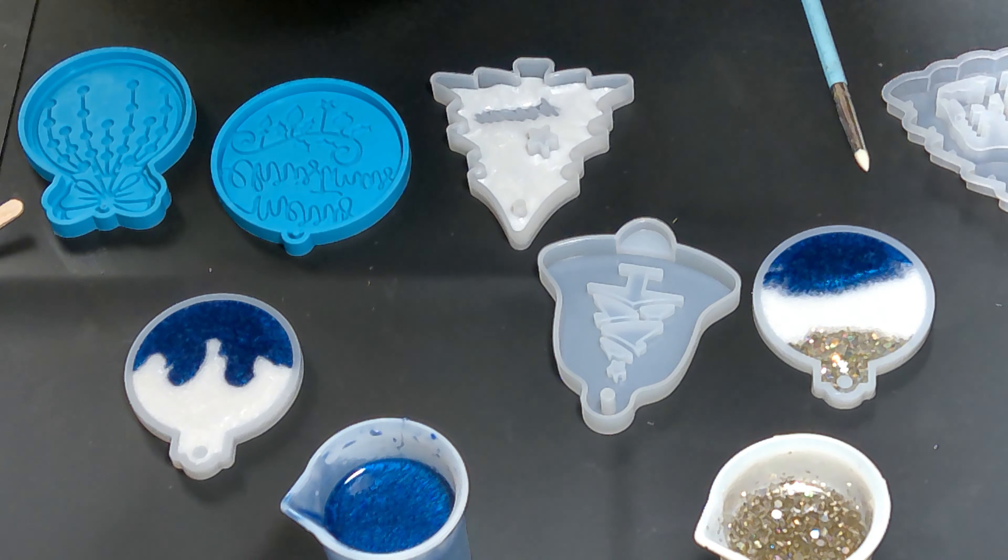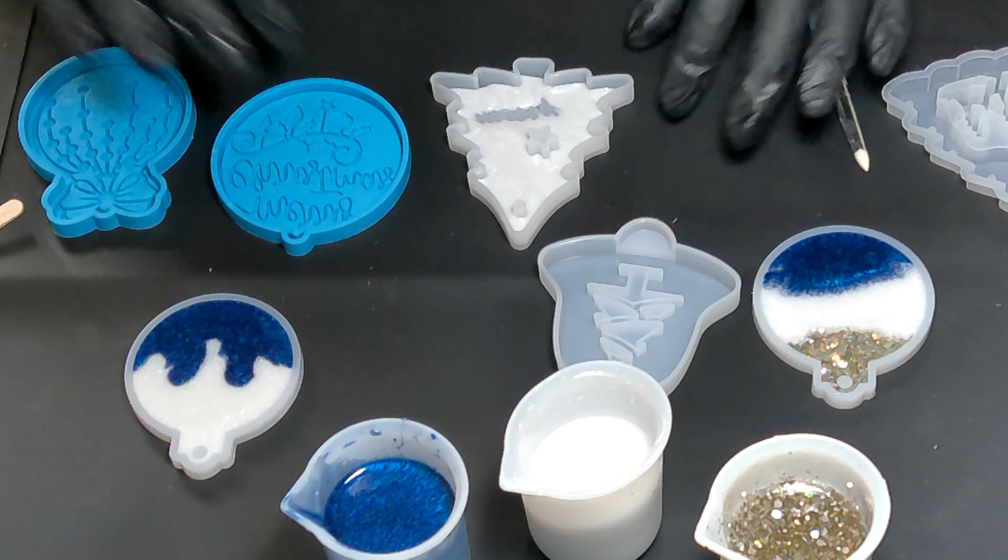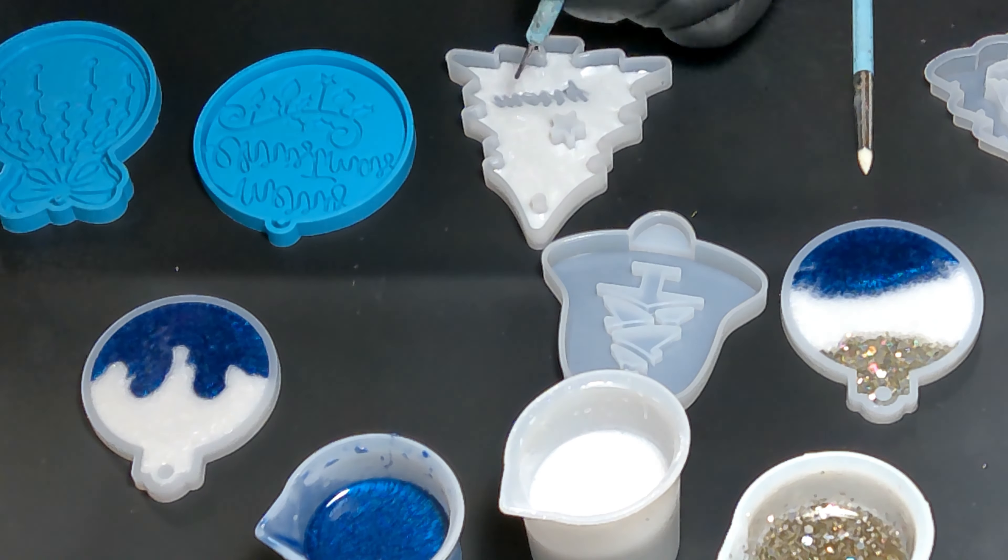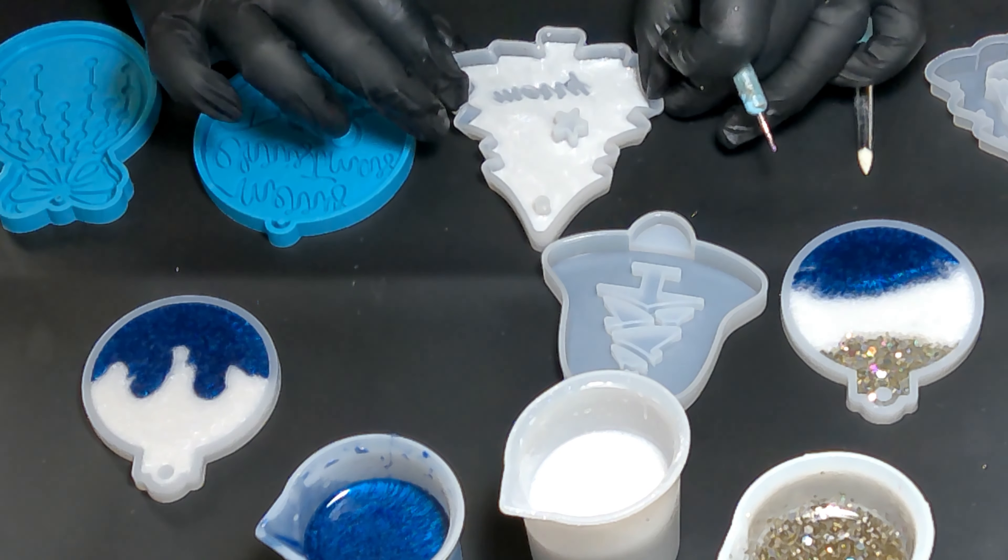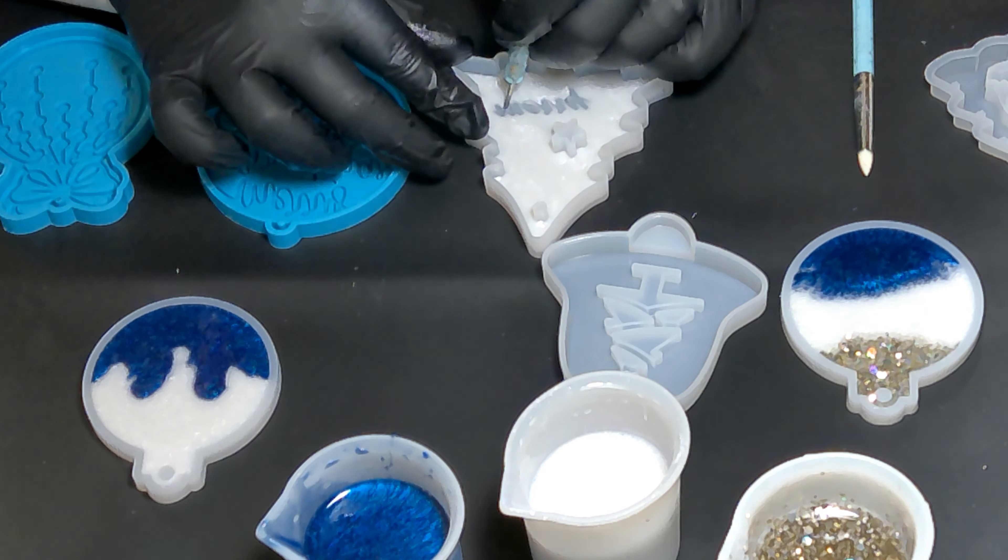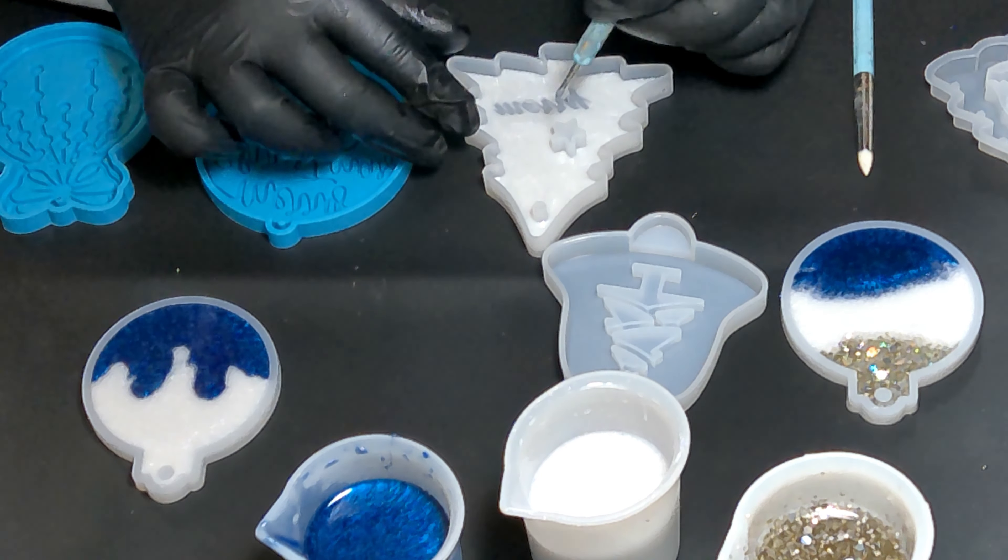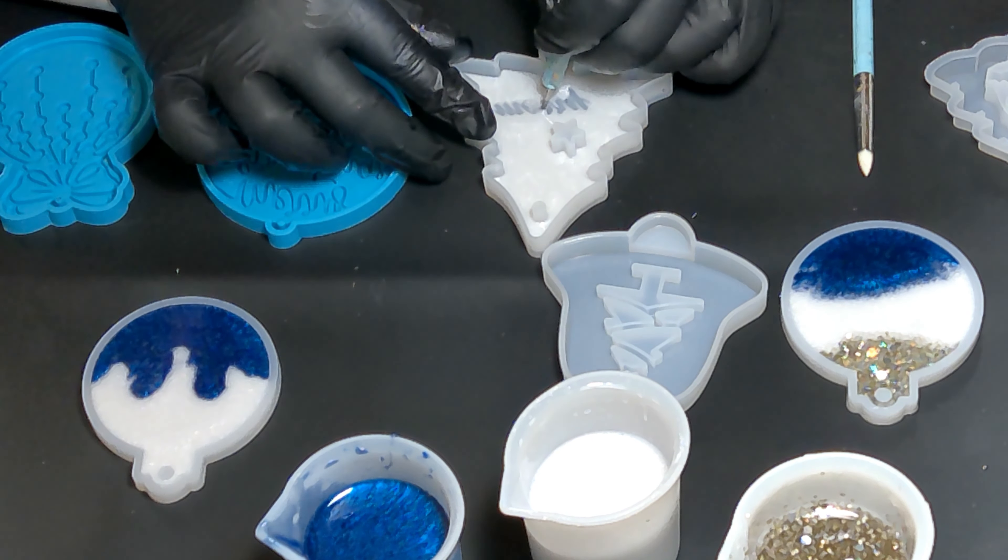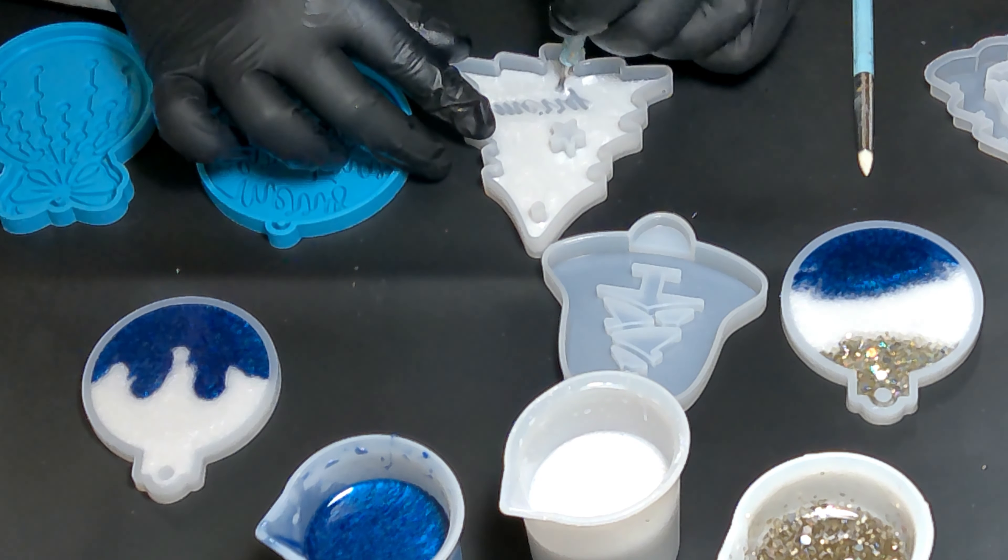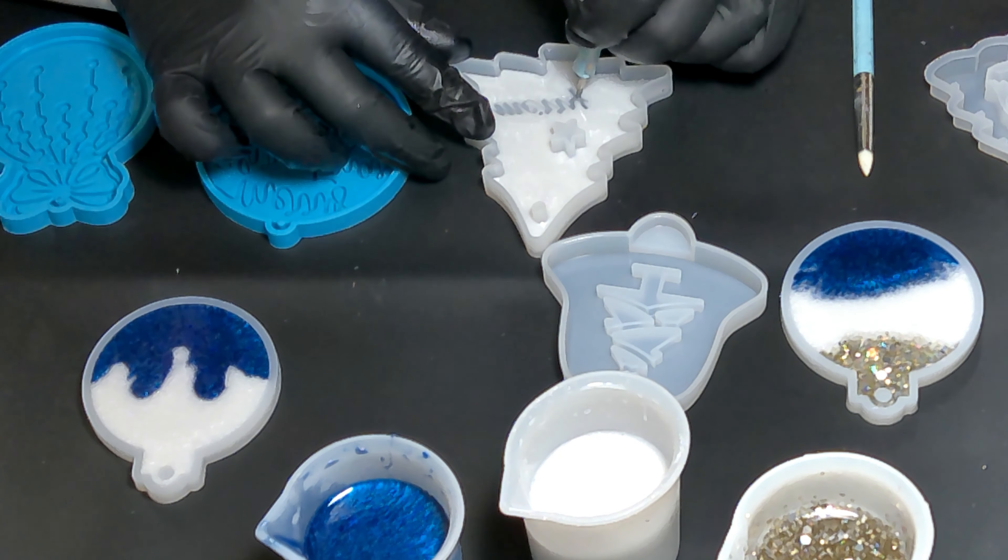After this dries and I put the blue on, you'll be able to see the two tones of the different colors. Right now I'm just spreading it out along the sides. I'm pushing the resin with my dotting tool up through the letters to make sure there are no air pockets and the resin gets all the way through so the words will show nicely when I demold later.